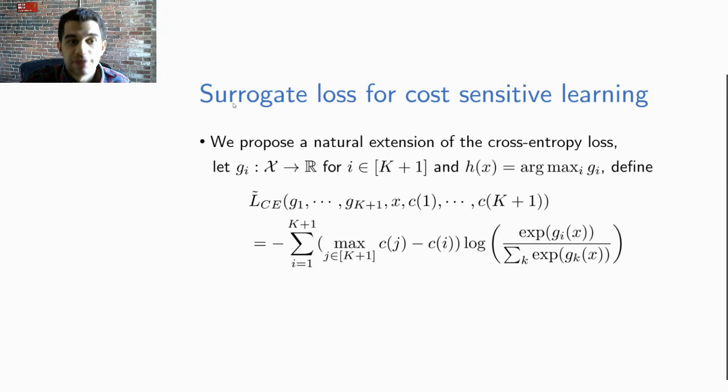So how do we solve this cost-sensitive learning problem? Well cost-sensitive learning is a realization of multi-class learning and we use the usual strategy of finding an easily optimizable surrogate loss for the true objective. We propose a natural extension of the cross-entropy loss to this setting. We are going to learn K plus one functions g_i for i in K plus one and our classifier h of X is going to pick the maximum of these.